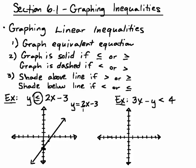But now step 2 is our line is either going to be a solid line, or it can be a dashed line. It's solid if you've got the or equal to. If it's less than or equal to or greater than or equal to, you're going to have a solid line.